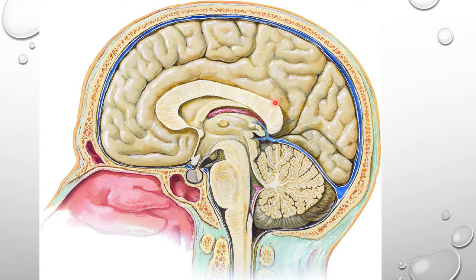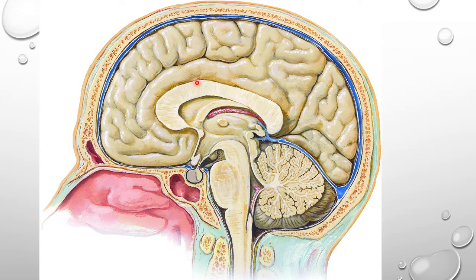Around the splenium, the posterior extension of the indusium griseum is continuous with the gyrus fasciolaris, and thence with the dentate gyrus. Traced on each side, the indusium griseum is continuous through the callosal sulcus — a sulcus just above the corpus callosum — with the neocortex of the cingulate gyrus. The substance of the indusium griseum is traversed by pairs of medial and lateral longitudinal striae. Both the indusium griseum and the longitudinal striae are vestigial parts of the hippocampal formation.